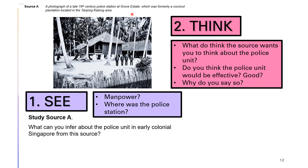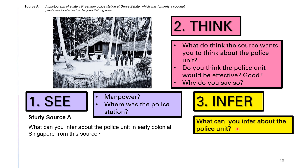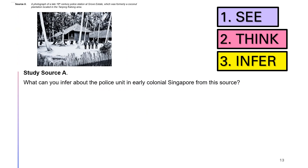Next, what can you think about the source? Do you think the police unit will be effective given that you understand there are a lot more migrants coming into Singapore? And why do you think having four policemen is enough manpower, or do you think that is not enough? From there, you do your inference. What can you infer about the police unit? After you have done that thought process of See, Think, Infer, you are going to write it down.